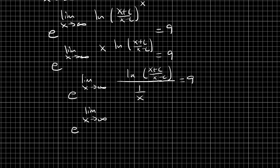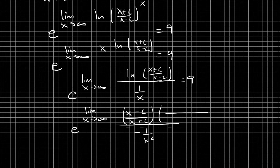The derivative of 1 over x is negative 1 over x squared. For the derivative of the natural log, we take 1 over the inside, which is the reciprocal: (x minus c) over (x plus c). Then we multiply by the derivative of (x plus c) over (x minus c). Using the quotient rule, the denominator is (x minus c) squared. The derivative of x plus c is 1, multiplied by (x minus c), minus the derivative of the denominator (which is 1) multiplied by the top.